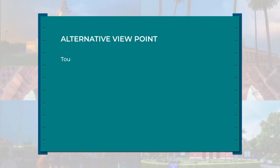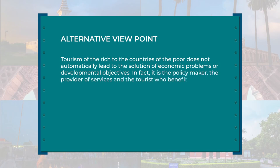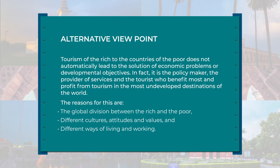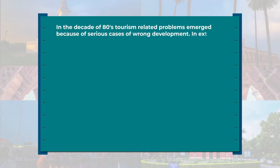After discussing the bottlenecks, we now present the alternative viewpoint on infrastructure development. Tourism of the rich to the countries of the poor does not automatically lead to the solution of economic problems or developmental objectives. In fact, it is the policy maker, the provider of services, and the tourists who benefit most. In the most undeveloped destinations of the world, it is the tourism industry that survives and gives bread and butter to the local population. The reasons for this include the global division between rich and poor, different cultures, attitudes and values, and different ways of living and working.